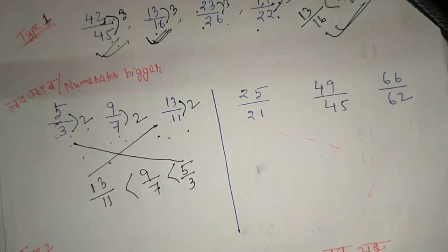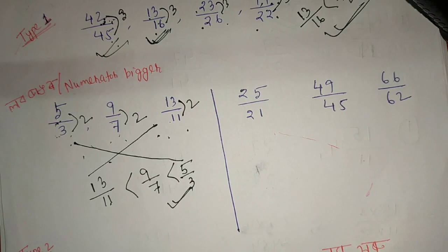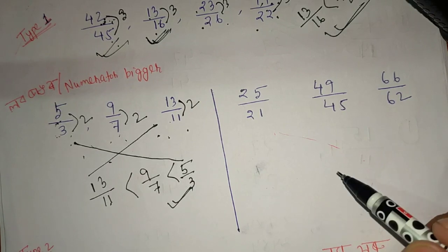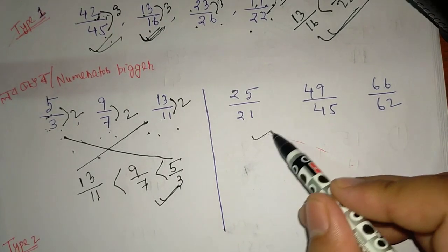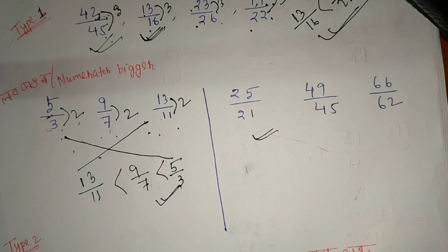Let's do this. Let's take a look. Next question: raise your head. Last one — let's take a look. Some of them are 1. The values are 25 by 11, 49 by 45, and 66 by 62.